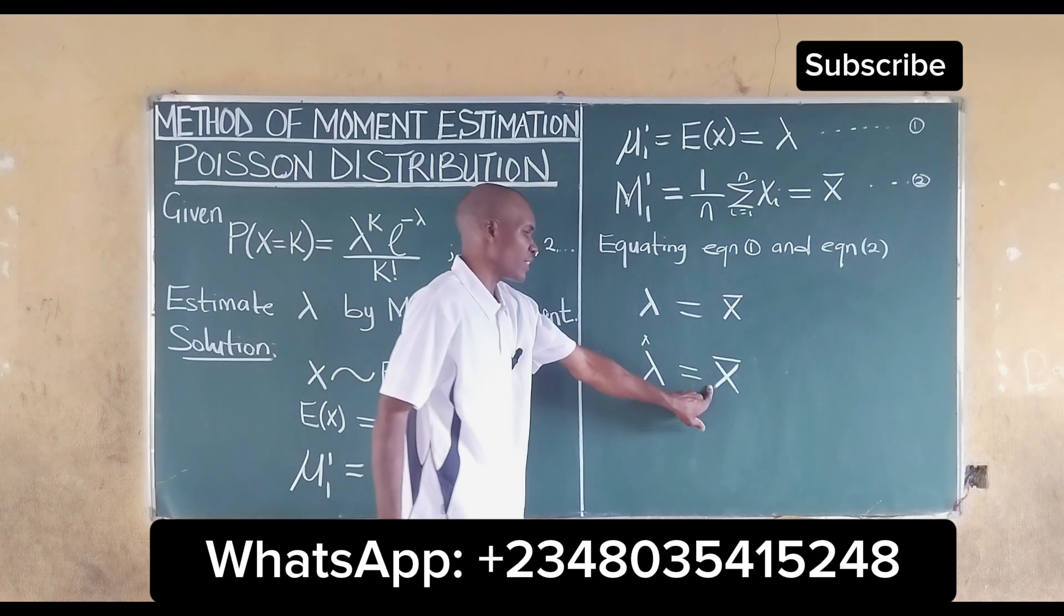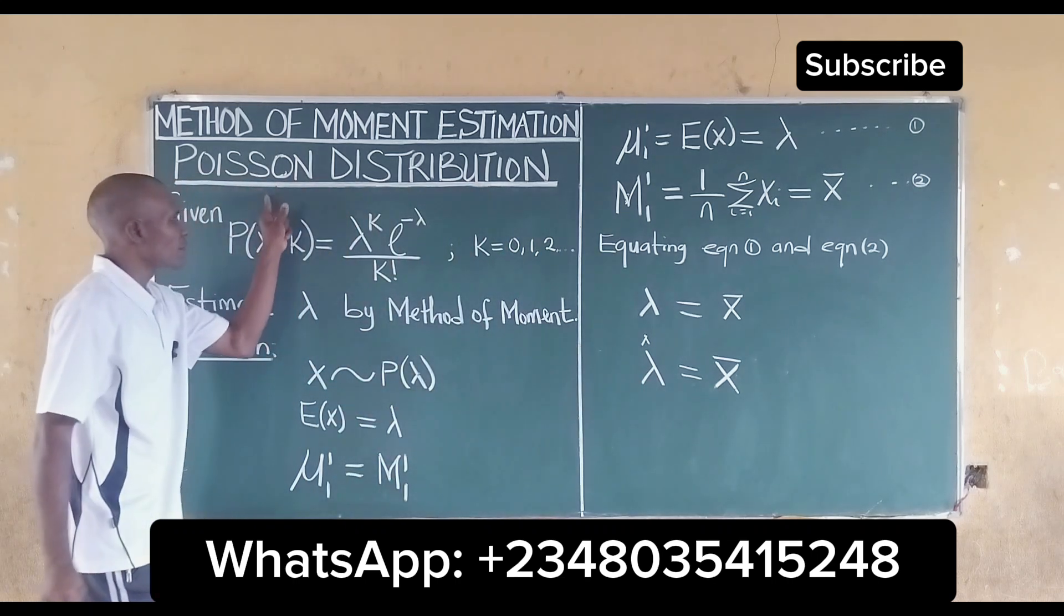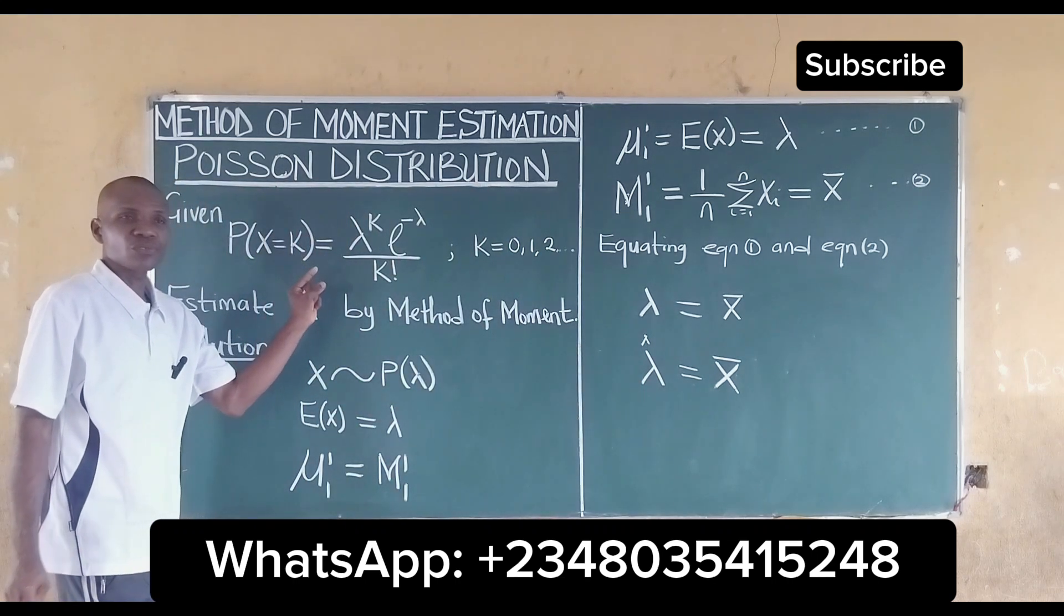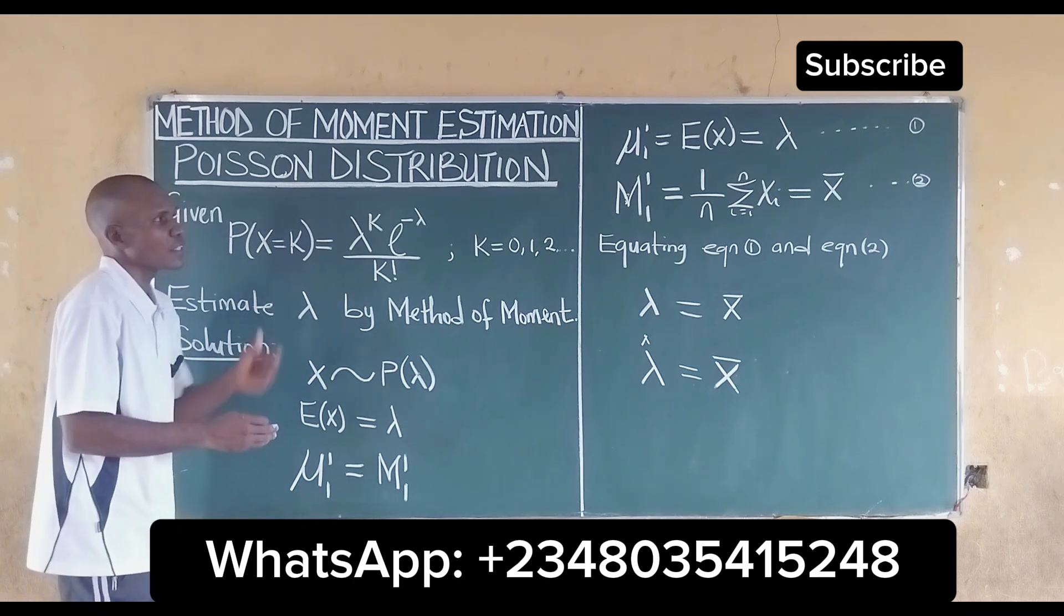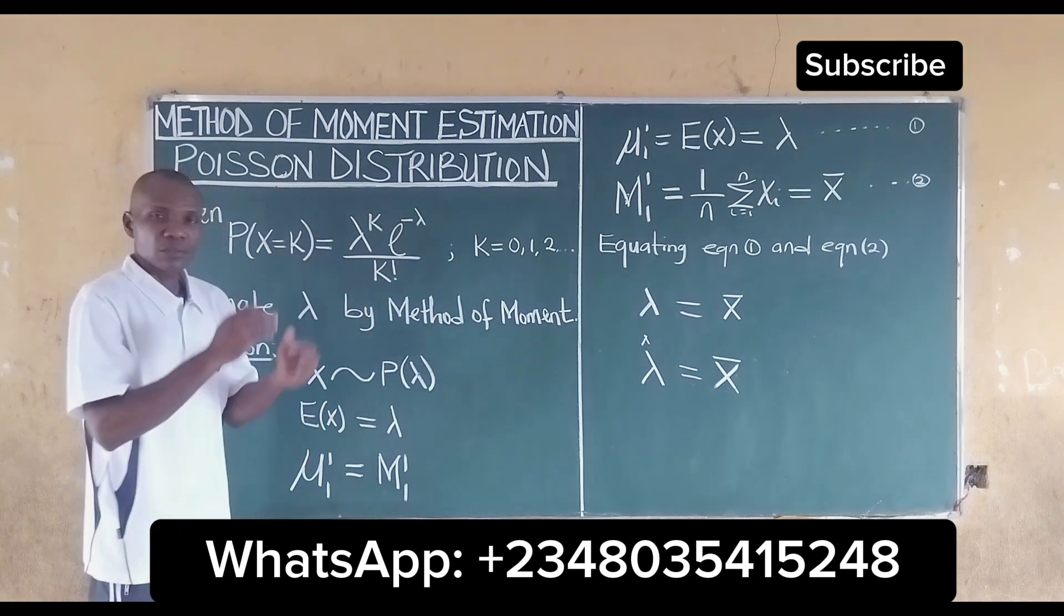So this is our method of moment for the given Poisson distribution. This is how to obtain the first moment for the Poisson distribution.